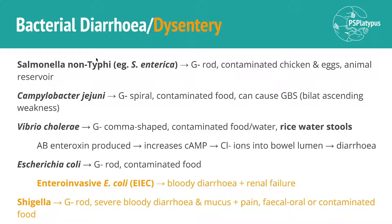It can kill you if you're not replacing those fluids and electrolytes. Salmonella non-typhi — the species of Salmonella that do not cause typhoid fever, such as Salmonella enterica — is a gram-negative rod. Contaminated chicken and egg consumption is how you might get it. It also has animal reservoirs, as opposed to Salmonella typhi, which does not have animal reservoirs — meaning animals can harbor and replicate the bacteria and pass it on to humans.